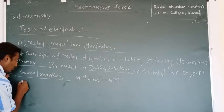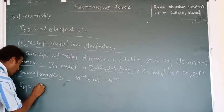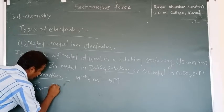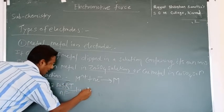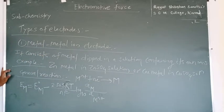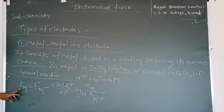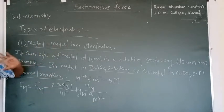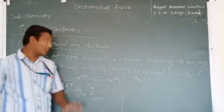The potential of this electrode, using the Nernst equation, is: E = E° minus (2.303RT / nF) log base 10 of [activity of metal divided by activity of Mⁿ⁺]. This is the Nernst equation for this type of electrode. We took the example, saw the general reaction, and now we have the potential expression.